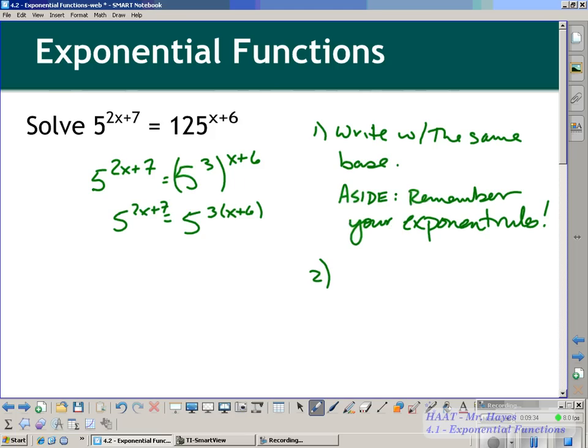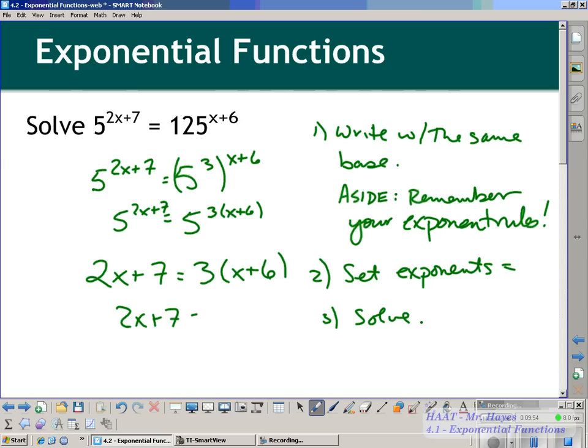So then after you have the same base, set exponents and then solve. So in this case now, 2x plus 7 is going to equal 3 times x plus 6. So 2x plus 7 equals 3x plus 18. And again, welcome back to Algebra 1, or maybe even pre-algebra, to be perfectly honest. So x is going to equal a negative 11.